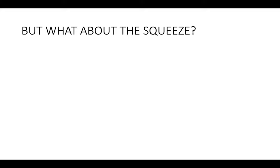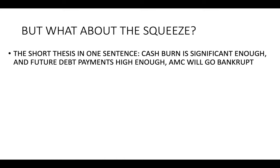What about the squeeze? That's one of the main things we, as apes, are sensitive to regarding dilution — does it hurt the squeeze? I want to focus on the short thesis. In one sentence, the short thesis says — and this is what a short is saying, not me — cash burn is significant enough and future debt payments are high enough that AMC is going to go bankrupt. The debt due in 2026, 2027, 2028, and 2029 — most of it's further out.